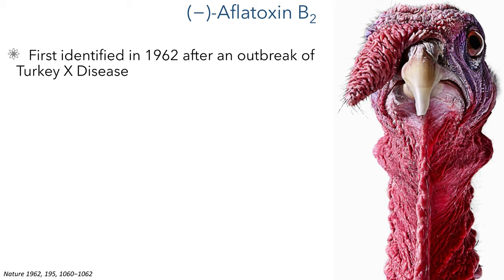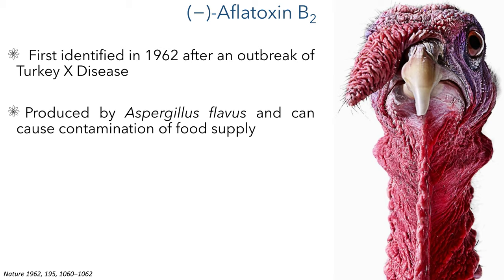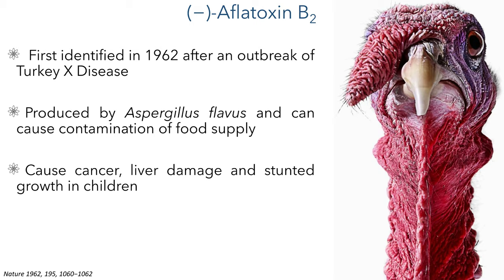Aflatoxin B2 is part of a larger family of aflatoxins that were first identified in 1962 after an outbreak of Turkey X disease, which had an unknown cause at the time. Investigations into the outbreak identified that these toxins were produced by the Aspergillus flavus bacteria, and have been known to cause the contamination of various food supplies including peanuts and wheat.